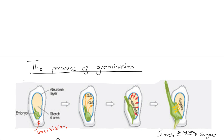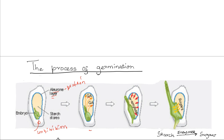The entrance of water also leads to activation of the embryo, which releases the hormone gibberellic acid. Using the maize grain as an example, there is a layer known as the aleurone layer that is rich in proteins. The gibberellins from the embryo stimulate the formation of enzymes from this aleurone layer.